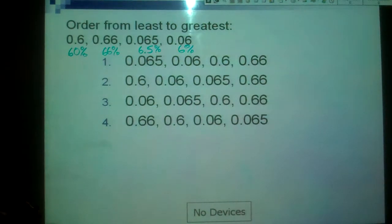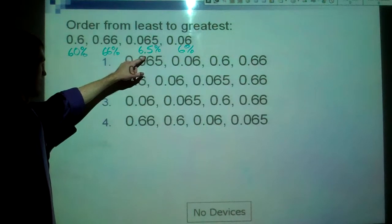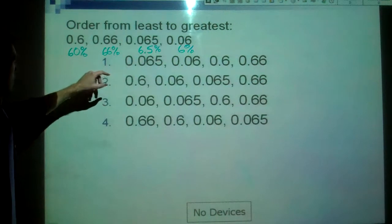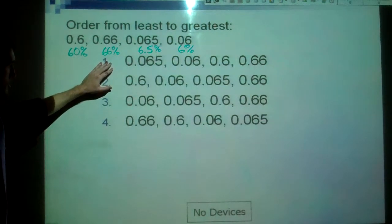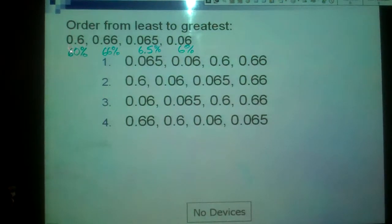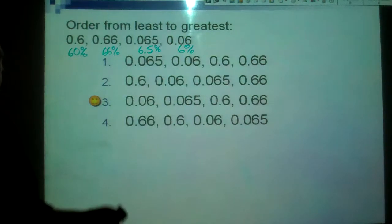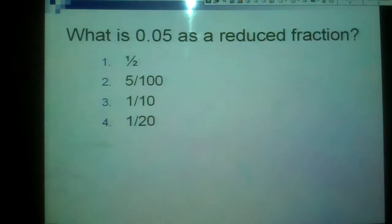Now, we can see that our smallest one, then, will be six percent. Our next biggest one will be six point five percent. Sixty percent will be our next one, and then sixty-six. So, whatever order that follows, looks like we want 0.06 first, 0.065 second. And then sixty percent, 0.6 next, and then sixty-six percent. Should be looking at number three right there. That's the easiest way to do that one, or that type of problem.